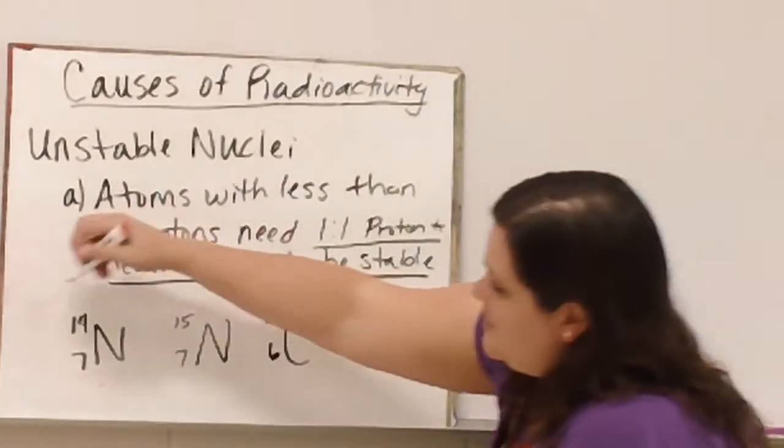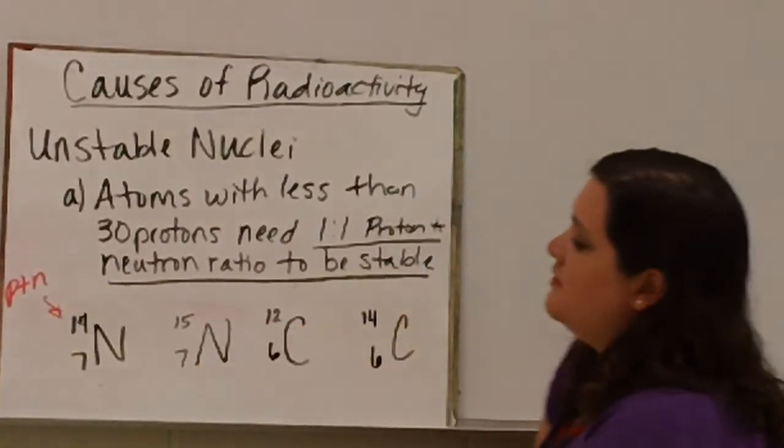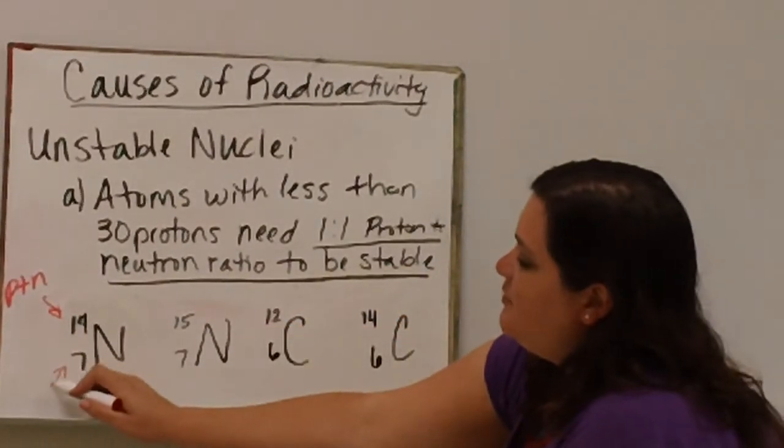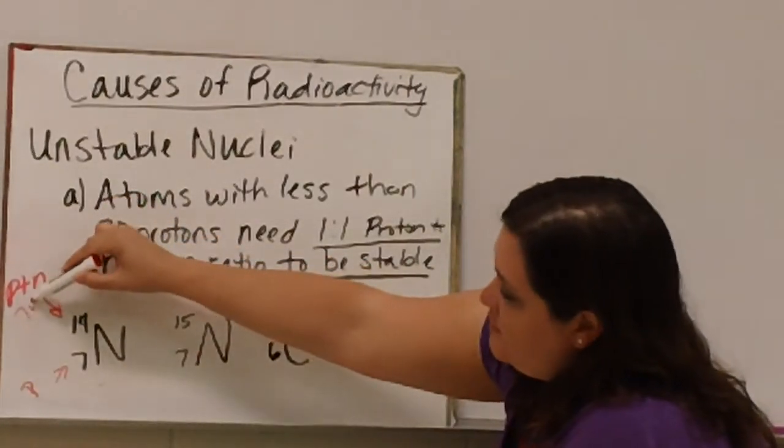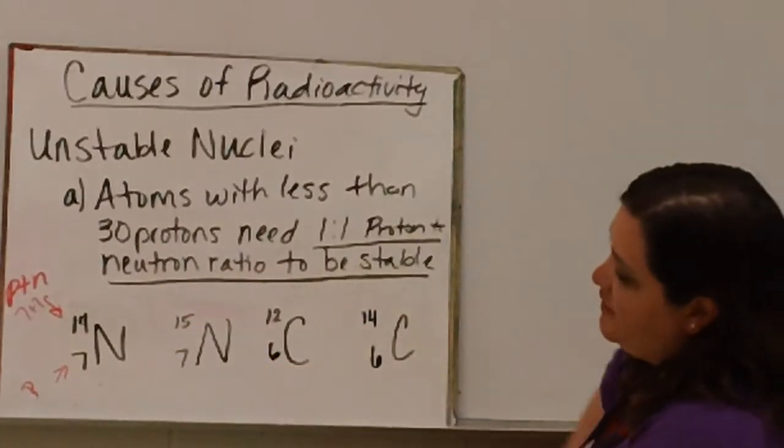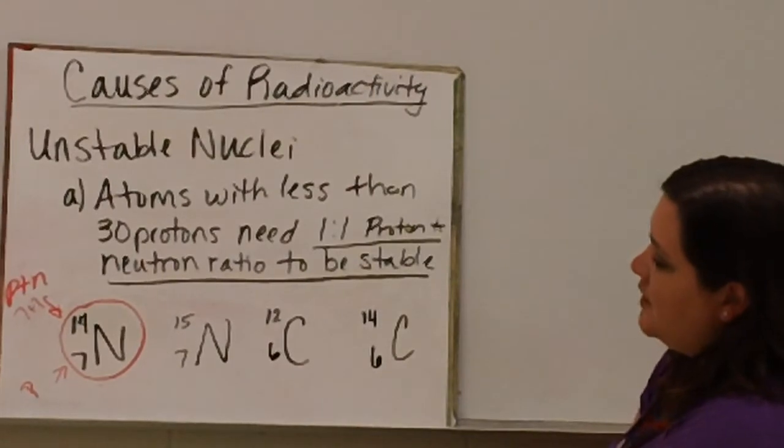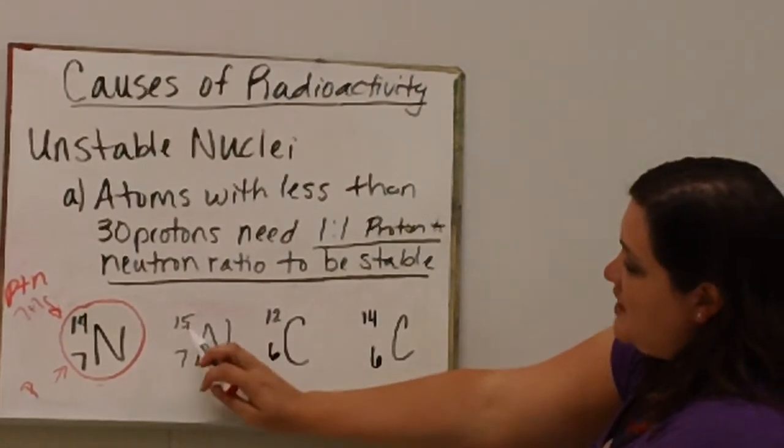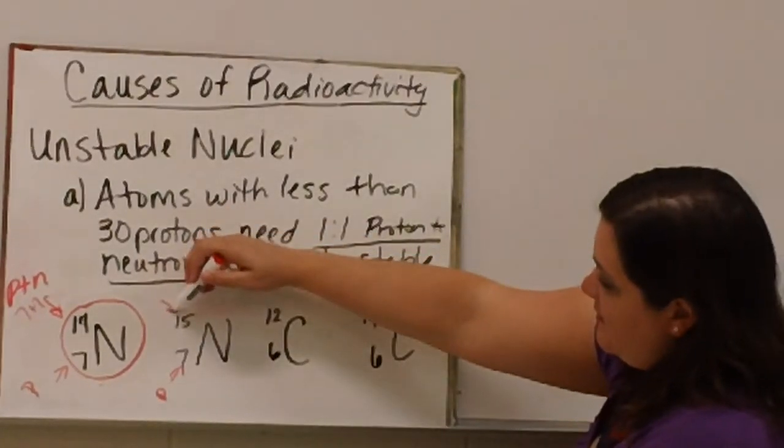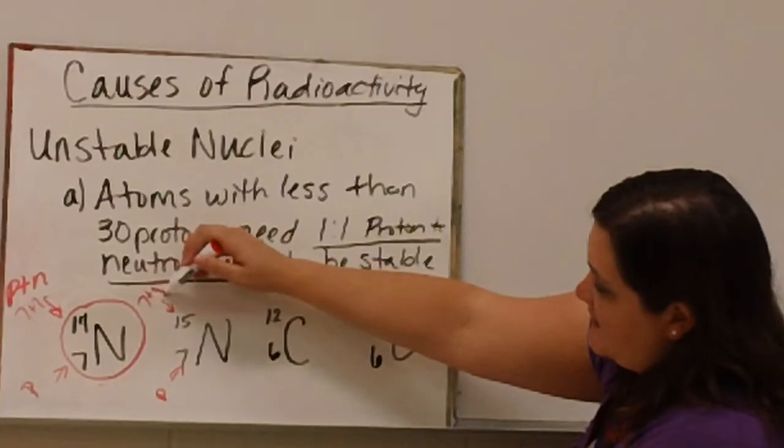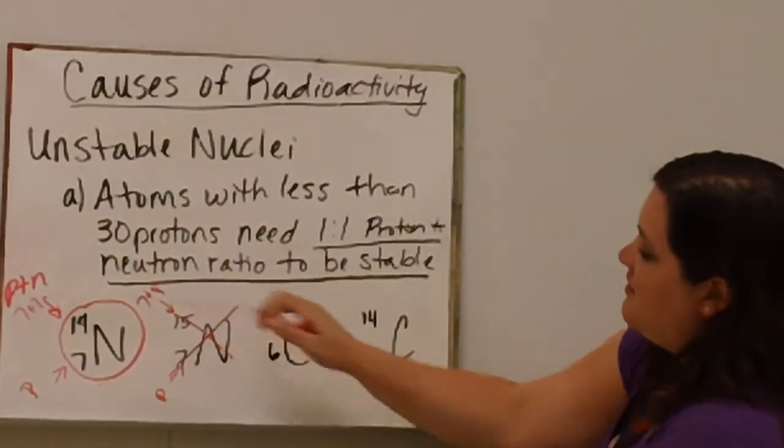If you recall, this number here on top is the mass number, which is the protons plus the neutrons. And so in this case, we have seven protons. And then if we had seven protons, that means we have seven neutrons. And so that's a one-to-one ratio. So this would be a stable nucleus. Although nitrogen-15 still has seven protons, it now has eight neutrons. So that is no longer a one-to-one ratio. And so that is not a stable nuclei.